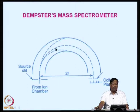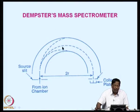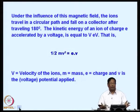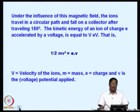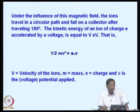Only ions with the exact path reach the detector; others do not. As we increase the collector plate voltage, we collect ions at separate voltage values. Under the influence of the magnetic field, the ions travel in a circular path and fall on a collector after traveling 180 degrees. The kinetic energy of an ion of charge E accelerated by voltage V is: ½mv² = eV. In a magnetic field, the ions experience a force HeV such that they travel in a circular path of radius r. By Newton's second law, v²/r = HeV/m, from which m/e = H²r²/(2V).